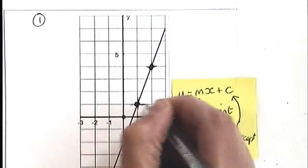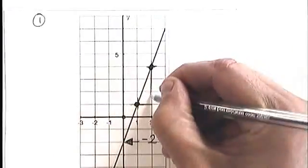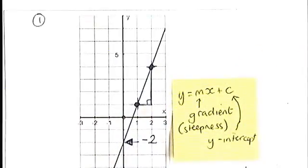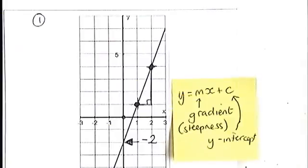Now, if you draw a triangle along and up from there, with a little right angle in there, that triangle can be used to work out the gradient of this line.